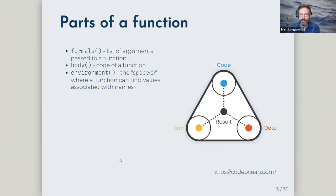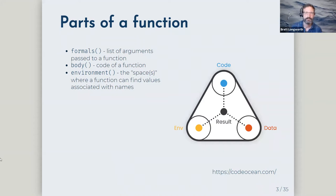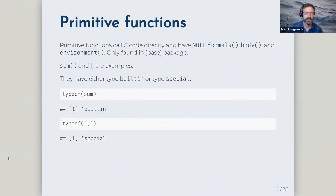There's a diagram showing that the key to reproducibility is these three things — formals, body, and environment — whether it's for a function or any part of your code. Once you have those three things the same, your result will be the same. Primitive functions are written directly in C; they pretty much only exist in base R, and one thing that makes them tricky is that they have null formals, body, and environment.